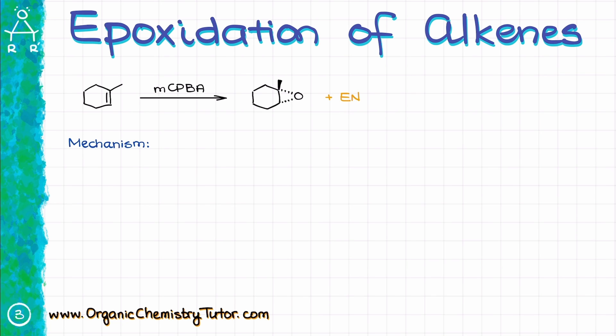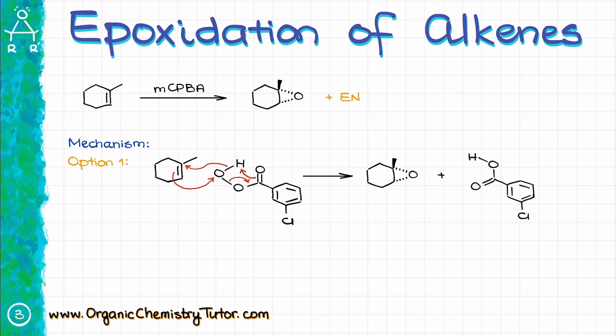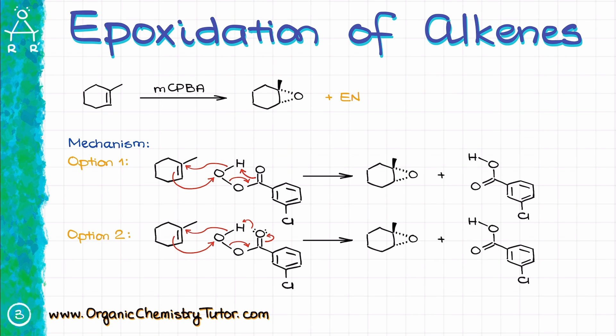Mechanistically speaking, this entire reaction is a concerted process that makes an epoxide in one mechanistic step. There are two ways how we show this mechanism. One way is going to use four arrows and another method is going to use five arrows. Typically, instructors and textbooks are going to prefer one or the other, so make sure you double-check with your instructor or textbook which one you are using in your course. They both are correct — it is not like one is strictly better than the other.